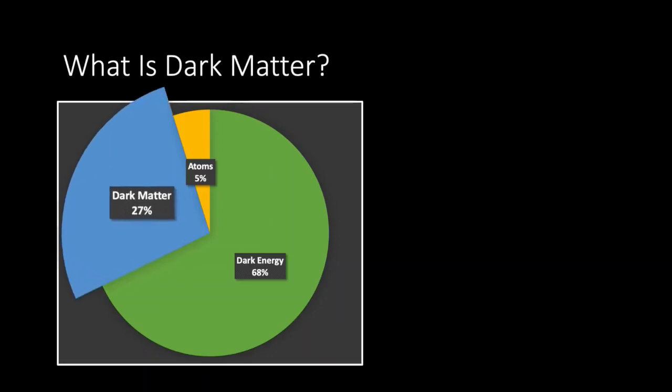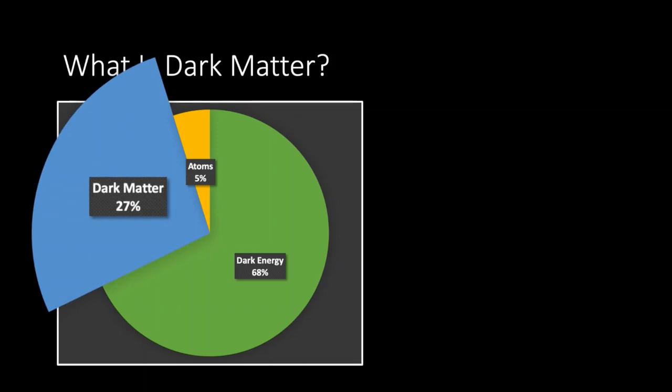Dark matter makes up 27% of our universe, compared to only 5% of visible matter. This means everything we see is only a tiny fragment of reality.